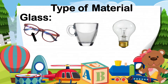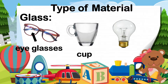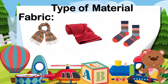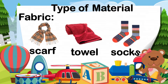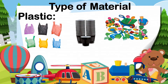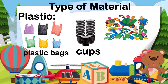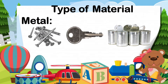Examples of glass materials are eyeglasses, cup made of glass, and the light bulb. Examples of fabric materials are scarf, towel, and socks. Examples of plastic materials are plastic bags, plastic cups, and plastic toys. Examples of metal materials are nails, key, and tin cans.